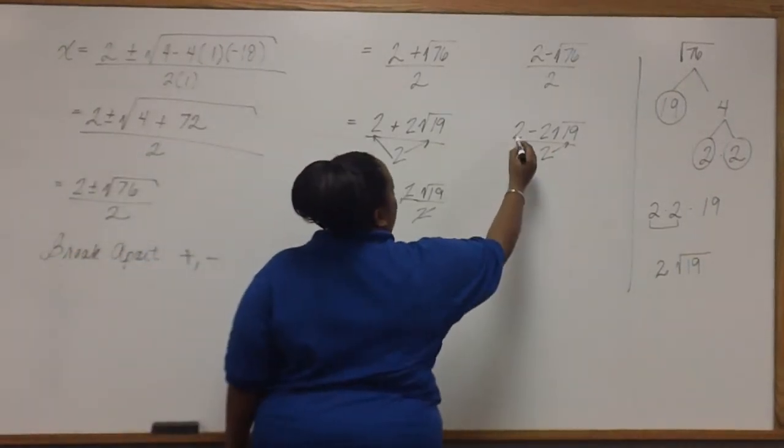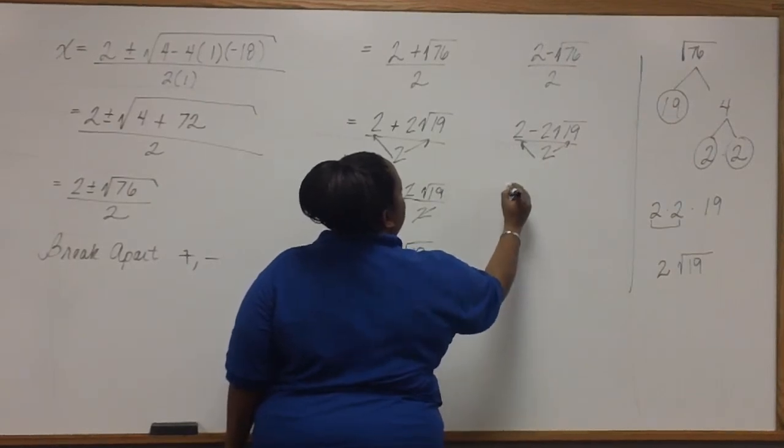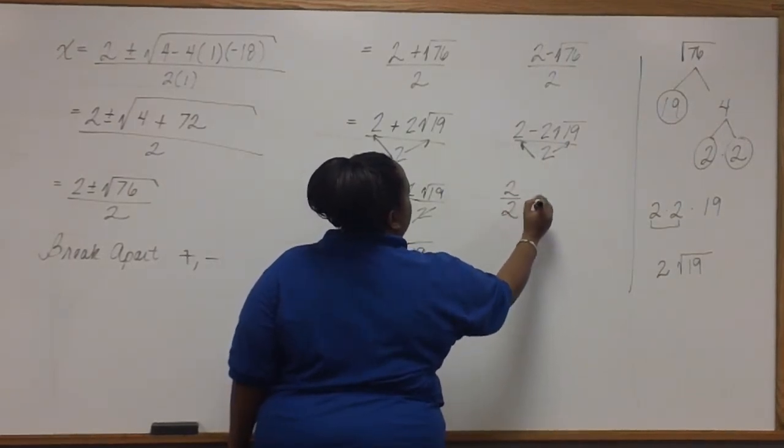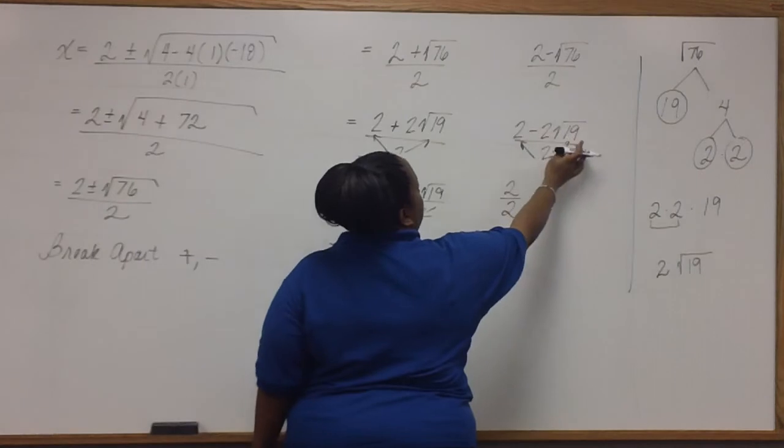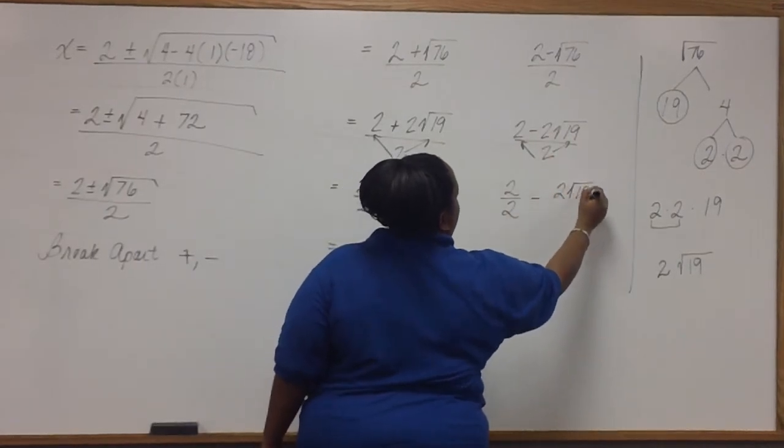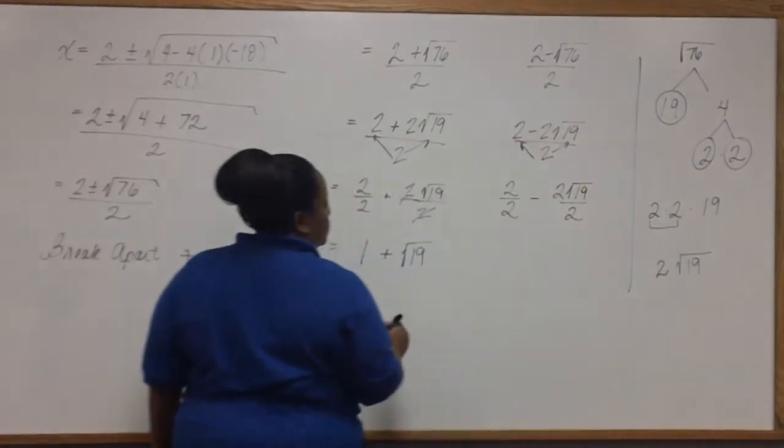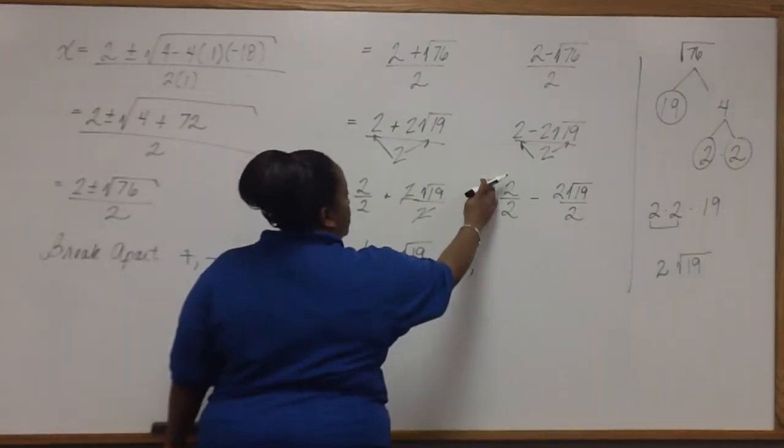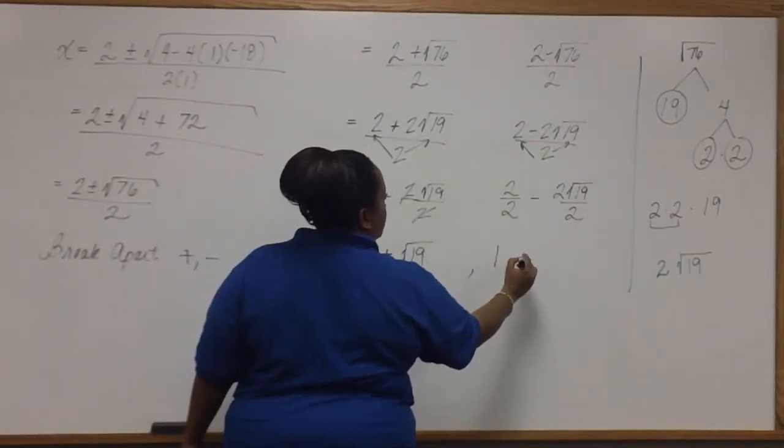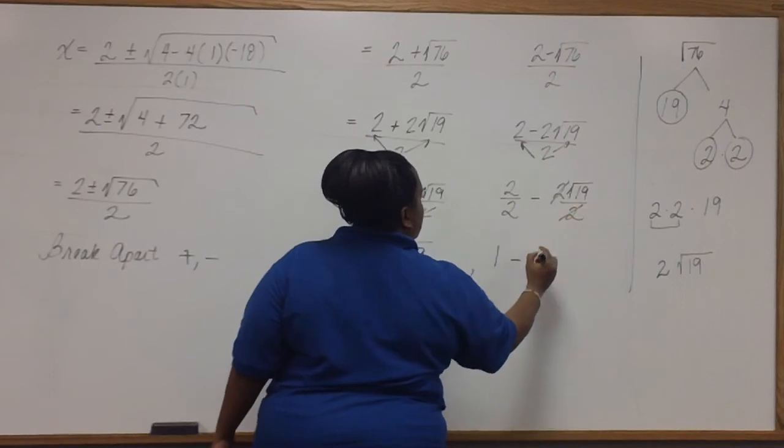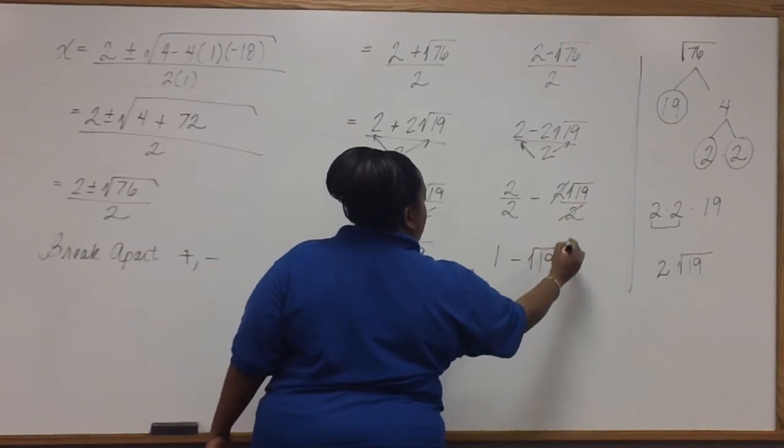Over here, we have 2 over 2. Minus. On the other side of the minus sign, 2 square root of 19 over 2. 2 divided by 2 is 1. Minus square root of 19.